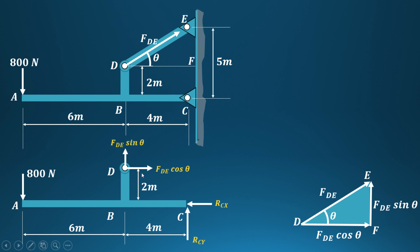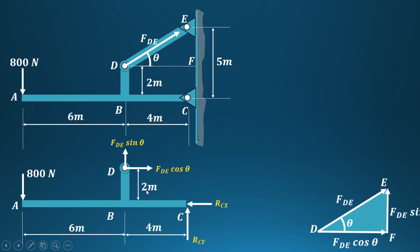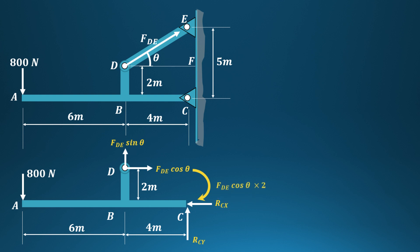The horizontal and vertical components of FDE produce the same effect as FDE itself. The horizontal component produces a moment at point B: FDE·cos θ multiplied by the perpendicular vertical distance of 2, creating a clockwise moment. The arrow goes in the clockwise direction toward P.